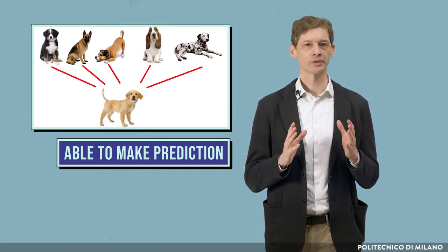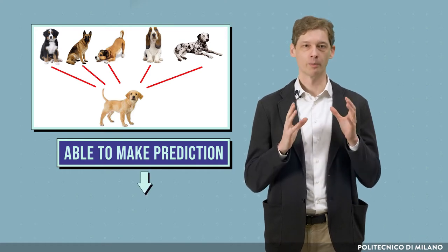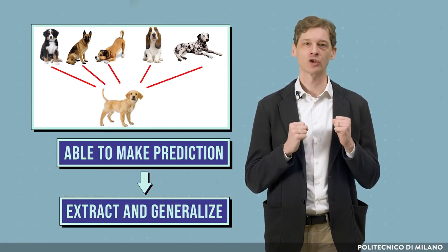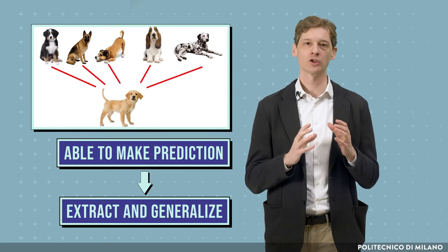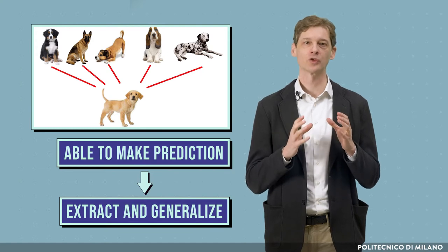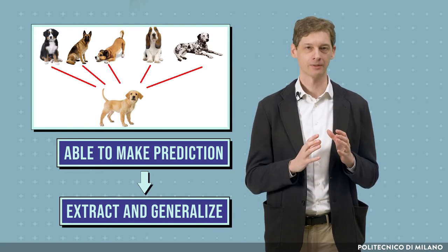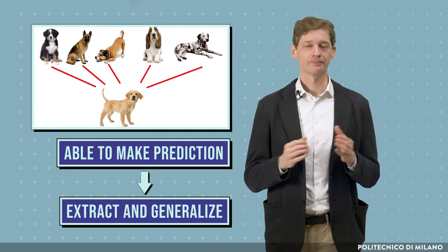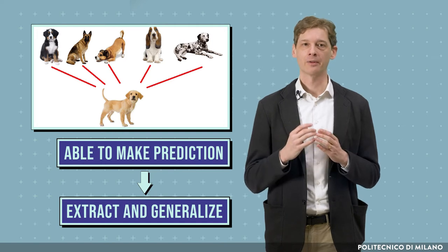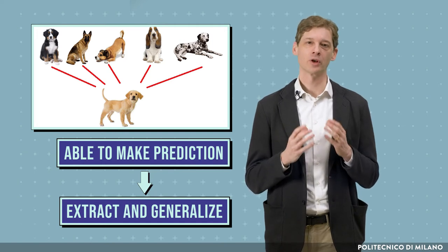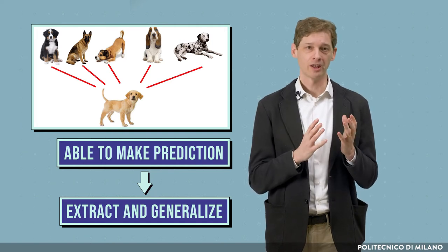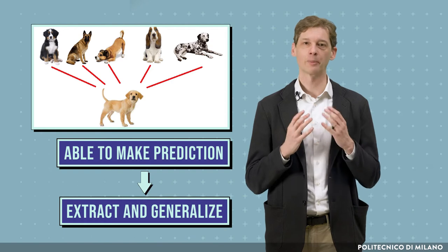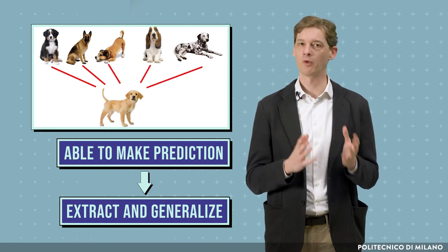In other words, we want to learn models that can extract and generalize the knowledge contained in the training dataset, similar to what our brain does. In fact, we are able to recognize a dog even if we have never seen that particular dog before.